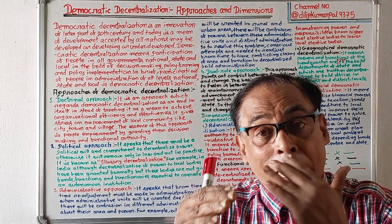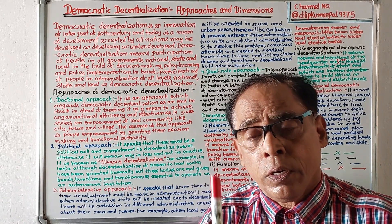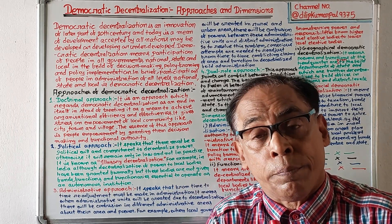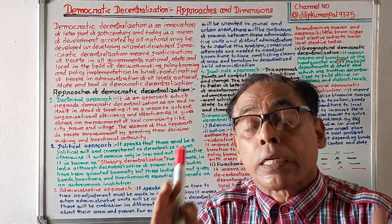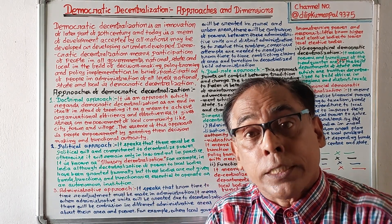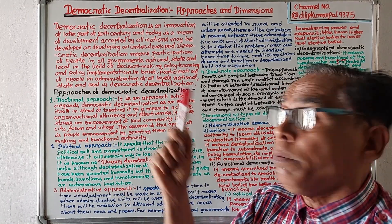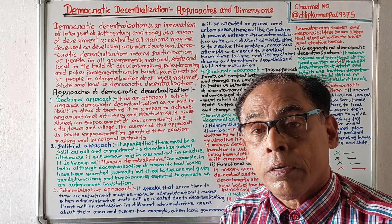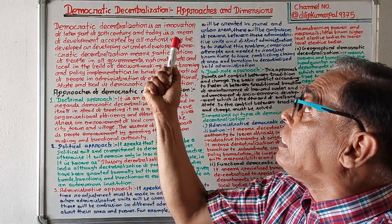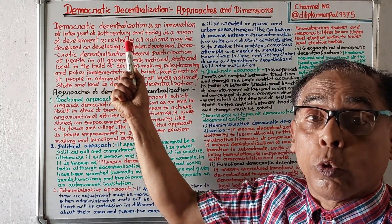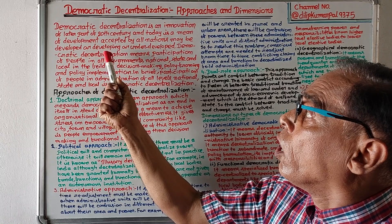Let us start democratic decentralization. We have already discussed the meaning and evolution of democratic decentralization in a previous video. Now we take up the approaches and dimensions. Democratic decentralization is an innovation of the later part of the 20th century and today is a means of development, accelerated by all nations — developed, developing, or underdeveloped.